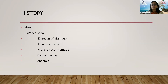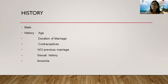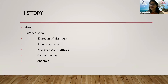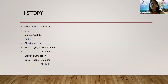In the history, we note the age, duration of marriage, contraceptive history — as a couple married six years but using contraception for five may have only tried for one year — history of previous marriage and children from prior relationships, sexual history, and whether the patient has anosmia, which may suggest a hormonal or genetic cause.